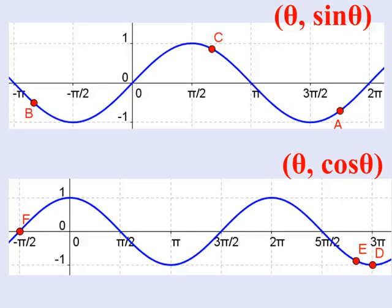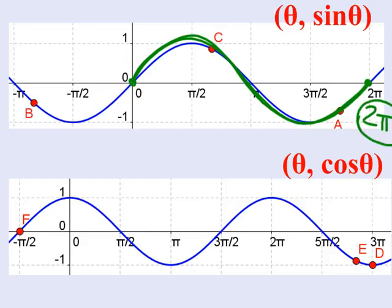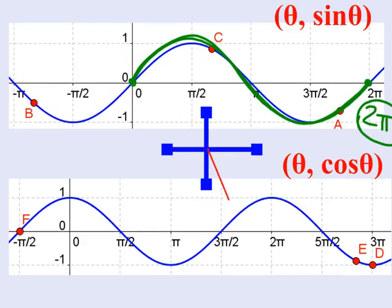This is exciting because we first saw these curves a long time ago and now we're really understanding where they came from. A major theme: the reason why the period — the time it takes to do one full cycle before repeating — is 2π is because that's how many radians are in a full unit circle. Once you rotate 2π radians around the unit circle, you start repeating yourself. That's why the sine and cosine waves repeat every 2π units.